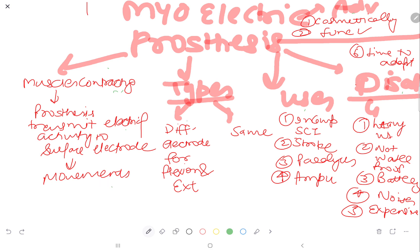Types are two types. In one type, there are different electrodes for flexion and extension. In the other type, there is the same electrode which is working for flexion and extension.